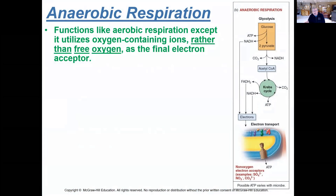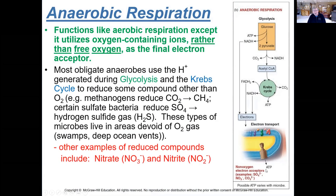In anaerobic respiration, cells go through glycolysis, Krebs cycle, and electron transport — but instead of oxygen, it is some other compound (a non-oxygen electron acceptor, such as sulfate or nitrate ions) that becomes the final electron acceptor at the end of the electron transport system.